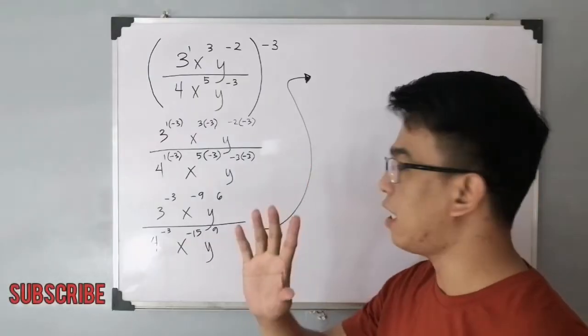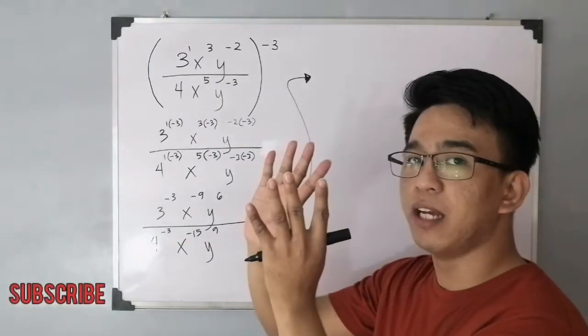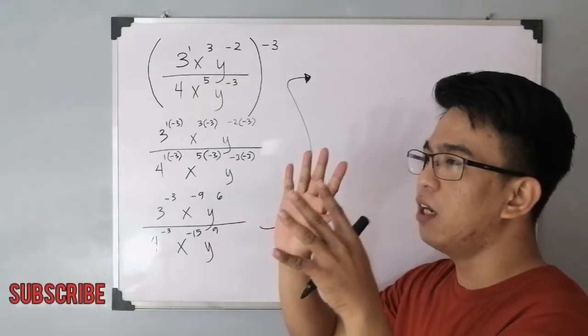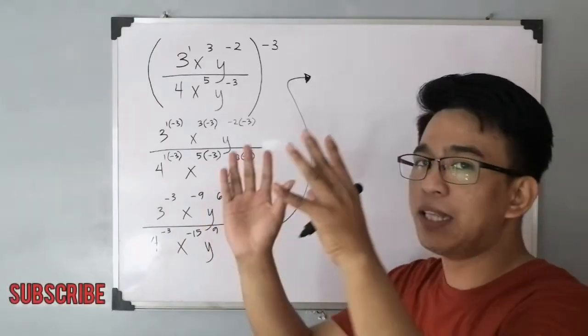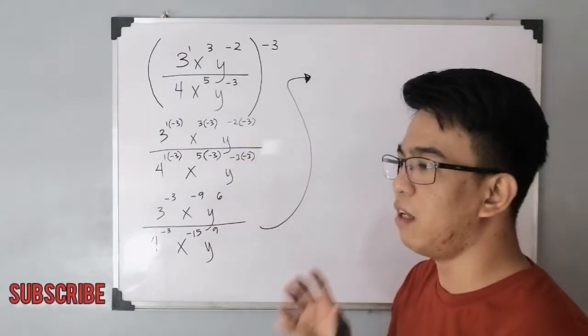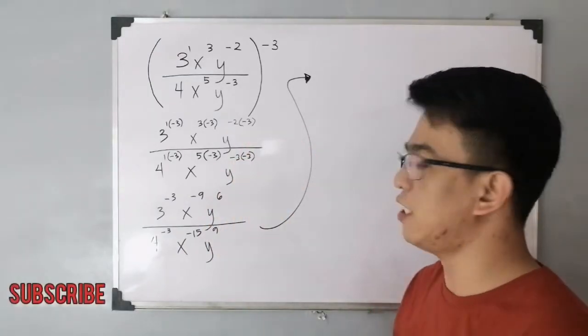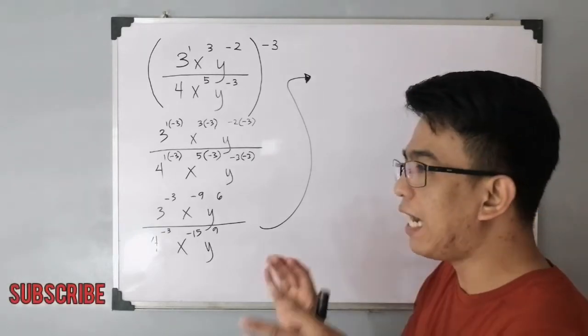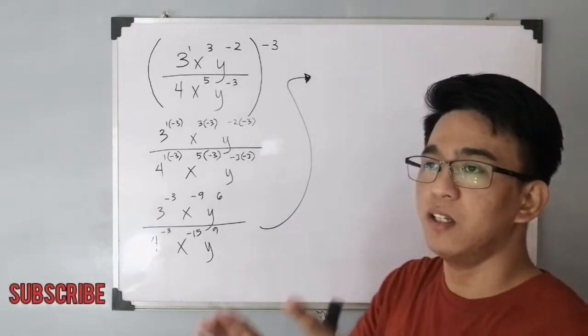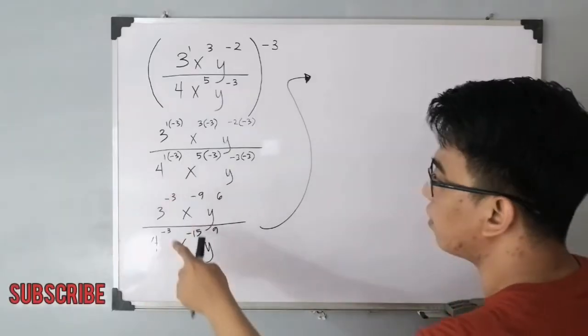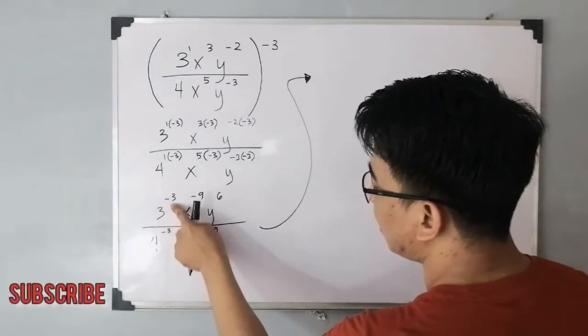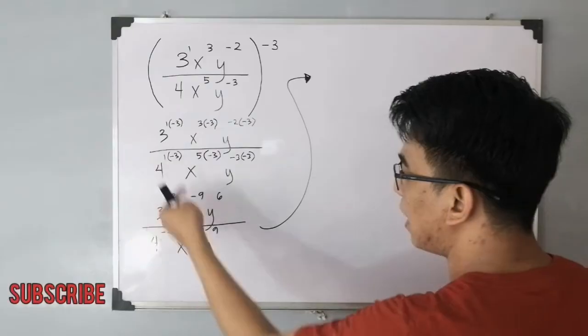To make it positive, yung exponent natin, if nasa numerator siya, ang gagawin nyo dun, yung base na yun, ay ililipat natin sa denominator. But if the base with the negative exponent is located at your denominator, kailangan ilipat mo siya sa numerator. So paano ba ginagawa yun? Let's say for example, you have 3 raised to negative 3, nasa numerator yan. Again, nasa numerator.